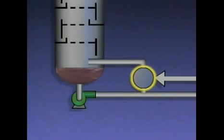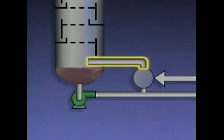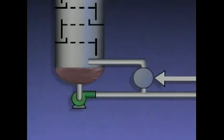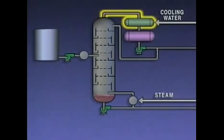Vapors from the reboiler, or in some cases a mixture of vapors and liquid, re-enter the tower. The vapors then rise up in the tower. These vapors and the heat they contain are often referred to as boil-up. The hot boil-up provides heat that's needed for the distillation process to take place in the tower. The vapors that rise up in the tower are routed to a condenser.